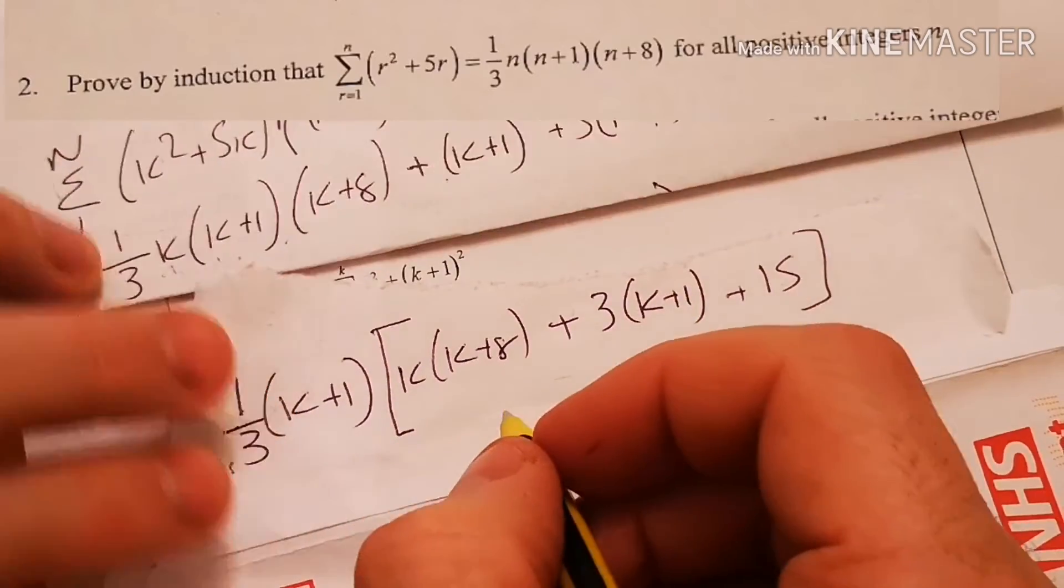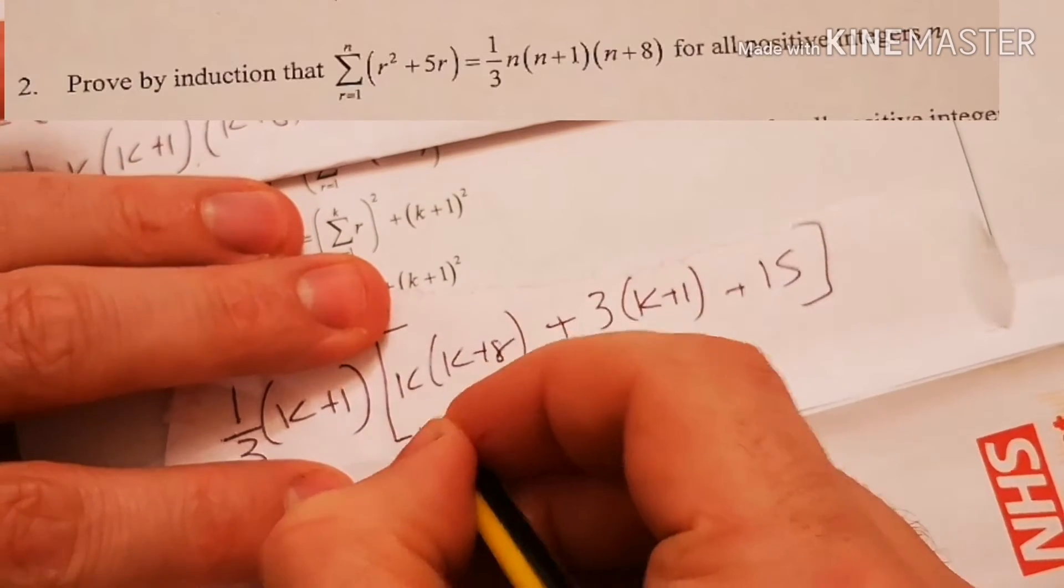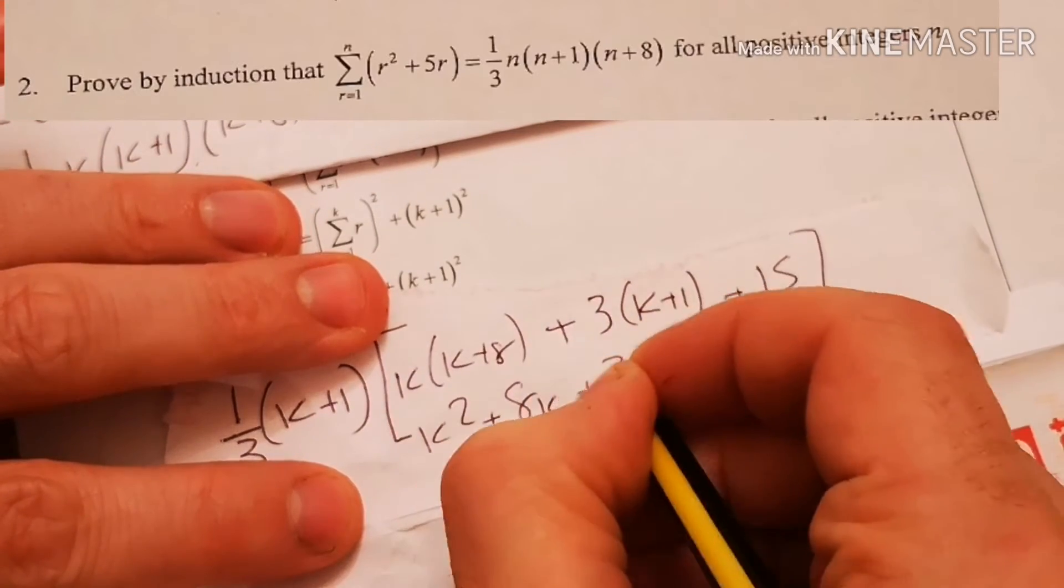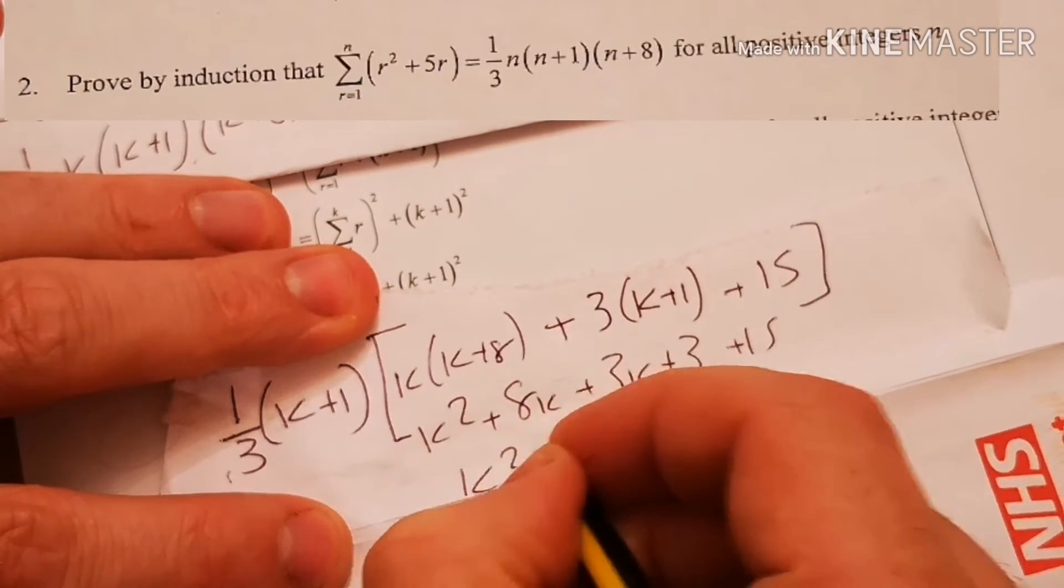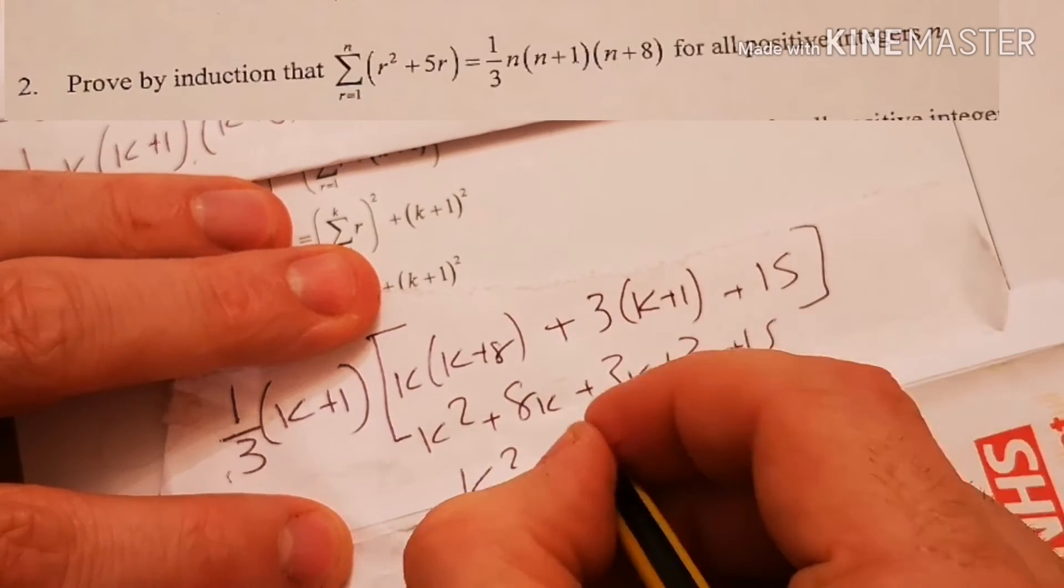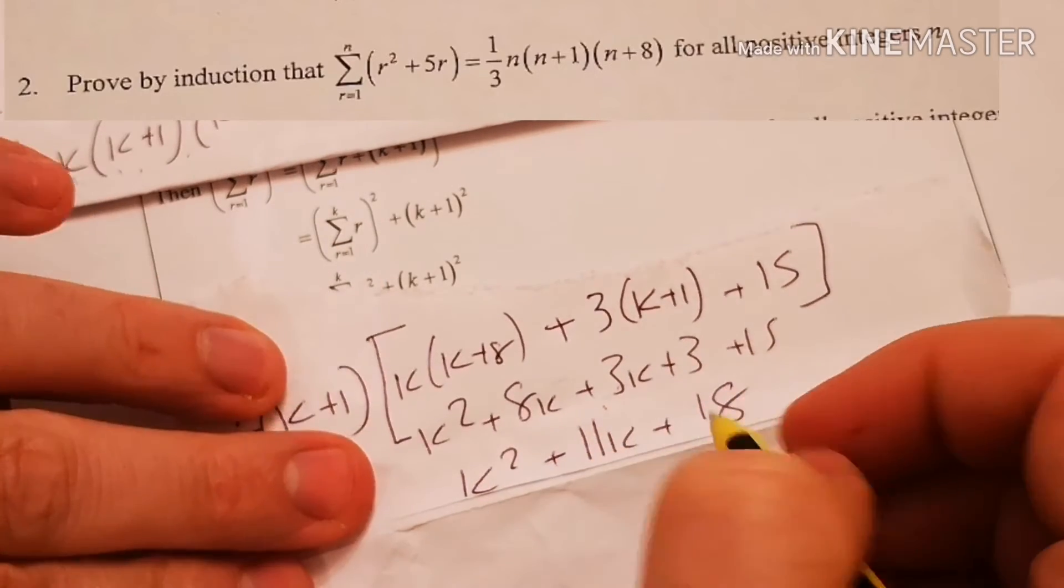And now I want to expand what's in the brackets. I'm hoping to get to this one here, which is k plus 2, k plus 9. So k squared plus 8k plus 3k plus 3, plus 15. Gives me k squared plus 8, 9, 10, 11. 11k plus 15, 16, 17, 18.